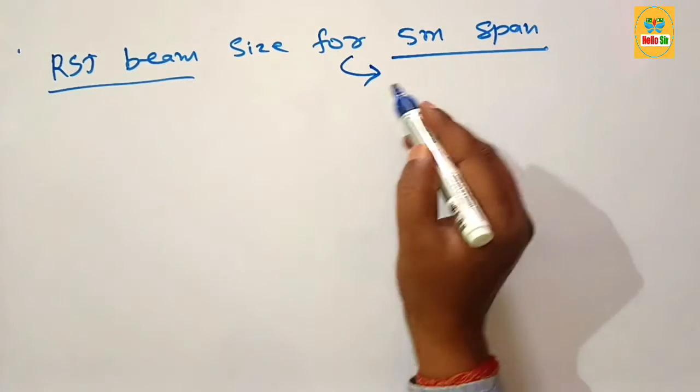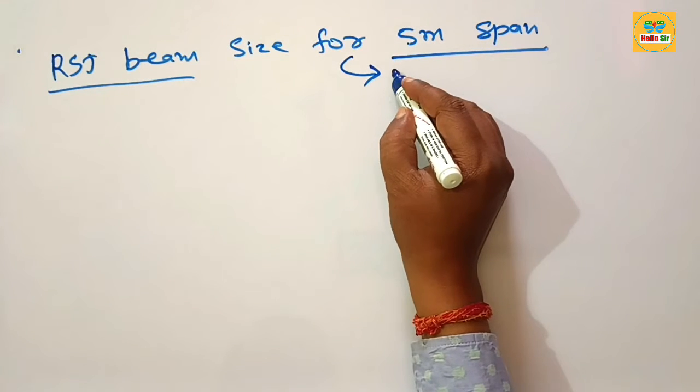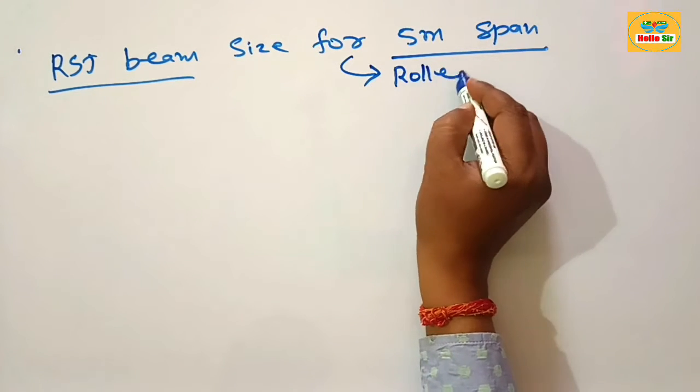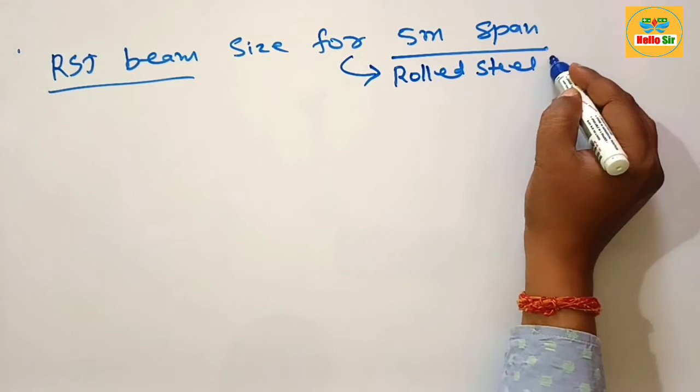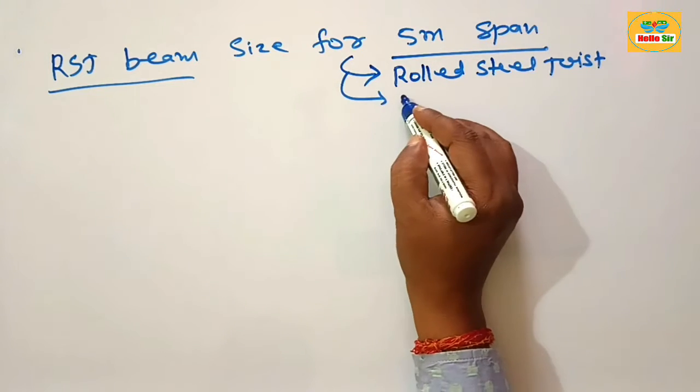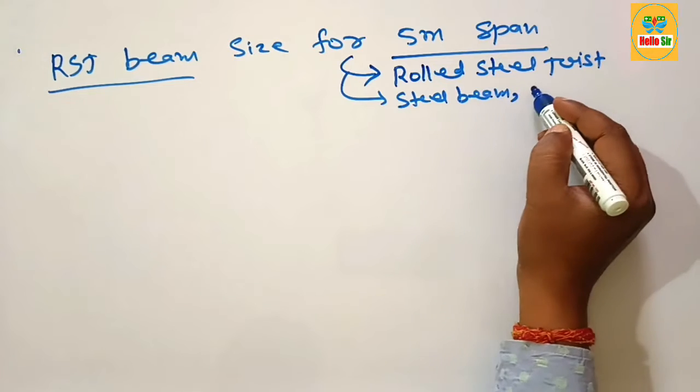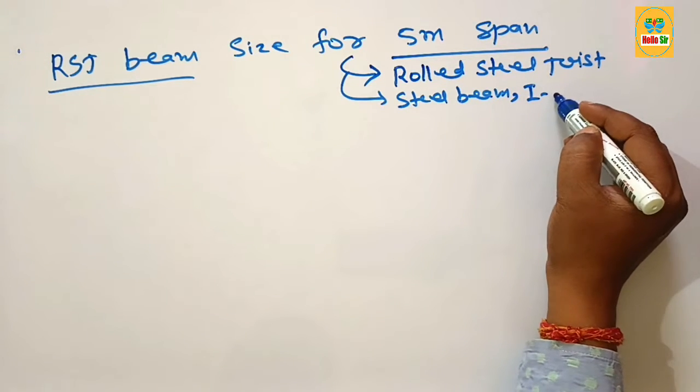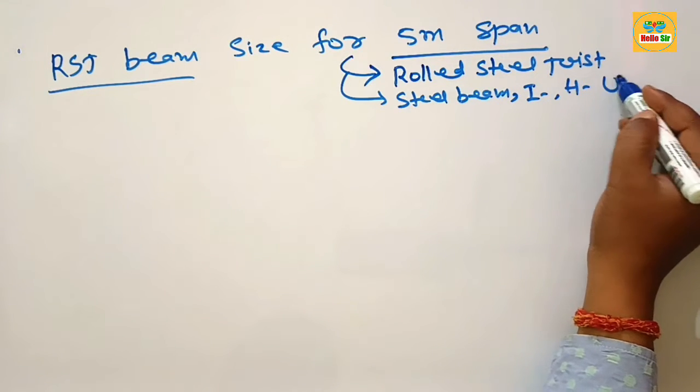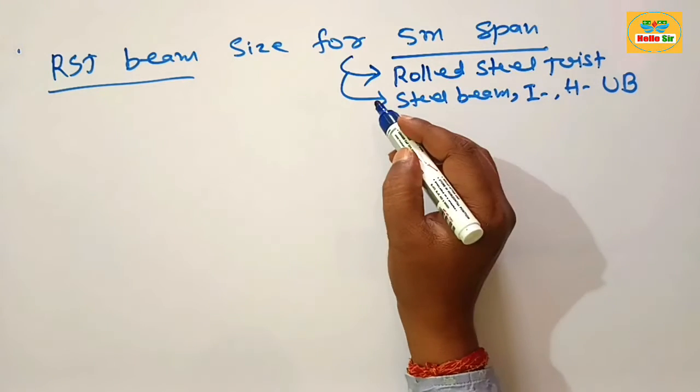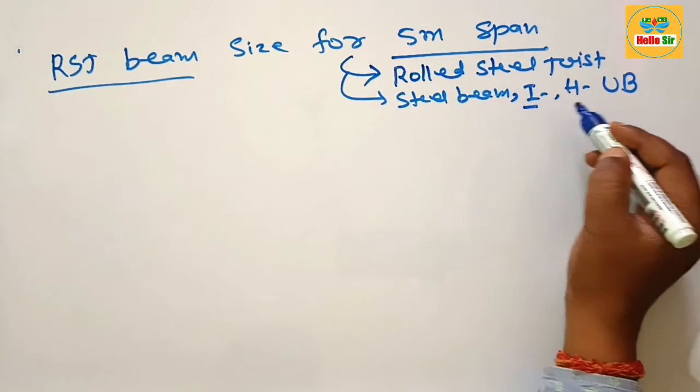First you understand about RSJ beam. It is rolled steel device commonly known as steel beam and there another name I beam, H beam, and universal beam. Their cross section is look like I beam and H beam.